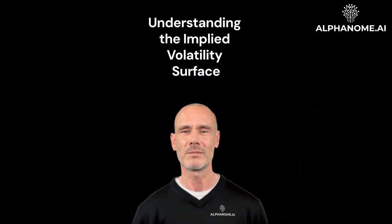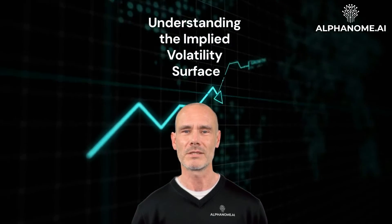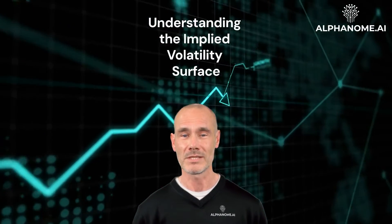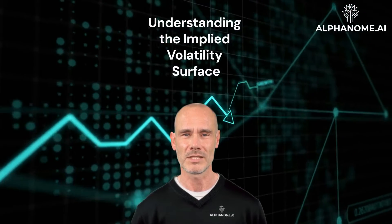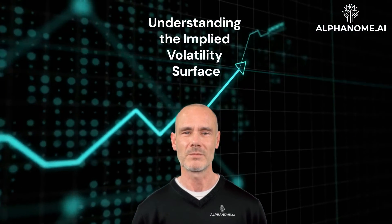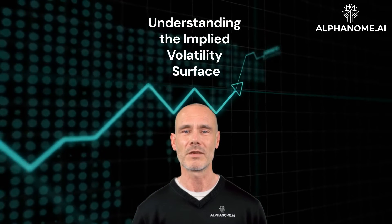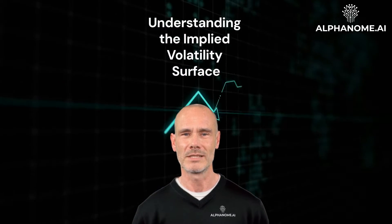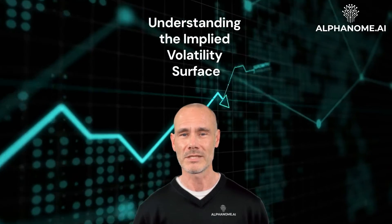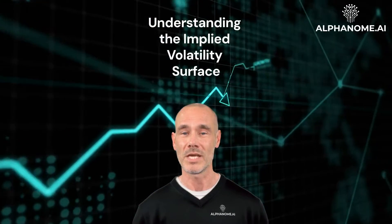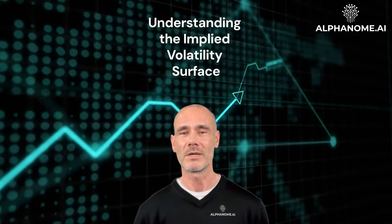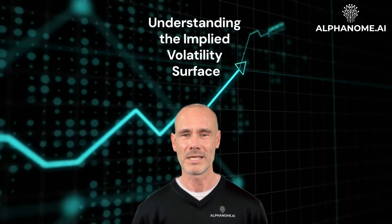Implied volatility is one of the key inputs used in option pricing models like the Black-Scholes model, along with other factors like the underlying price, strike price, time to expiration, and risk-free rate. The implied volatility surface plots implied volatility on the vertical axis against the strike price on the horizontal axis, with different expiration dates shown as individual curved lines. This allows investors to analyze the volatility smile or skew across different strikes and expirations.